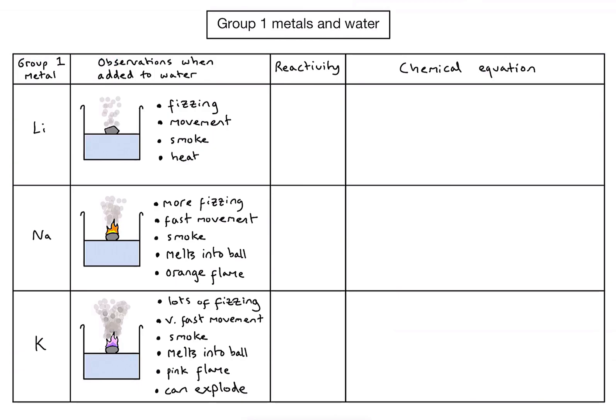So from those observations, we can immediately make some inferences about the reactivity of these metals. It would appear that lithium is the least reactive, then sodium somewhere in the middle and potassium is the most reactive. And this trend would actually continue down the group through cesium and rubidium, but they're too dangerous to do in a lab. So you're unlikely to see that in person.